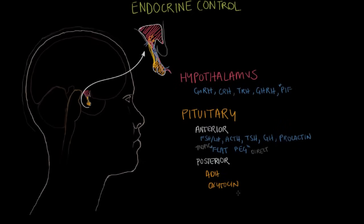A lot of the endocrine control in the body ultimately comes back to the pituitary gland, which is controlled by the hypothalamus — forming the bridge between the nervous system and the endocrine system. As big as the names of the hormones get, the idea behind them is pretty manageable: it's really just one part of the body stimulating another part of the body through chemical messages.